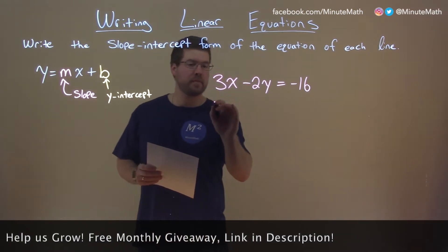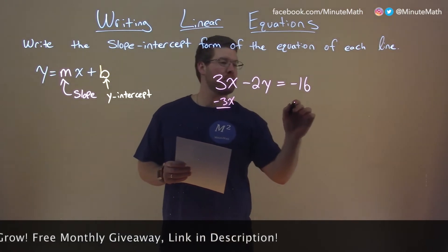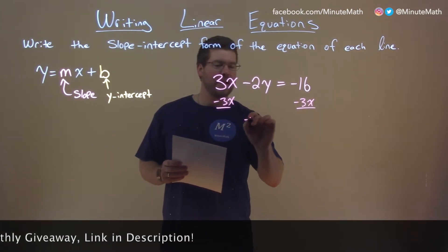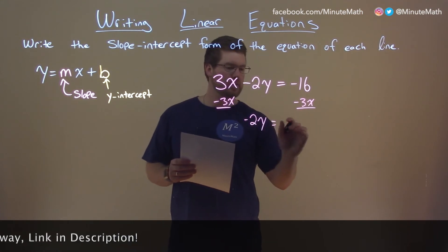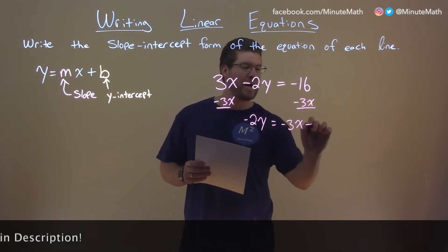First step to do that, subtract 3x to both sides and we're left with negative 2y equals negative 3x minus 16.